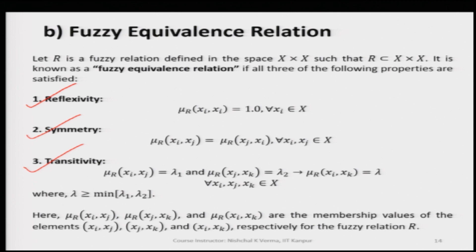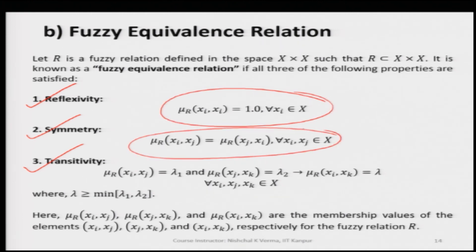For fuzzy equivalence relation we have three properties that need to be satisfied. Apart from reflexivity and symmetry, we have an additional property which is transitivity, and these three properties need to be satisfied before any fuzzy relation set R can be called a fuzzy equivalence relation. Since we have already discussed reflexivity and symmetry, now we see what transitivity, the third property, is.